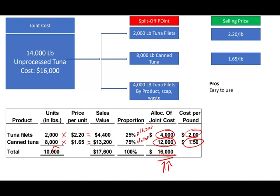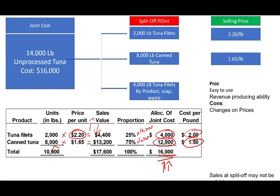The pros of the sales value at split-off method: it's easy to use and it looks at the revenue-producing ability — the more revenue, the more cost you should absorb. The cons: prices change all the time. If tuna prices jump up substantially or drop, the allocation changes. Also, the sales price at split-off may not always be available easily. The price could fluctuate for various reasons, making this method less reliable in some situations.